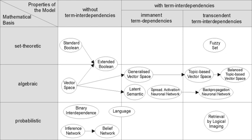An information retrieval process begins when a user enters a query into the system. Queries are formal statements of information needs — for example, search strings in web search engines. In information retrieval, a query does not uniquely identify a single object in the collection. Instead, several objects may match the query, perhaps with different degrees of relevancy.